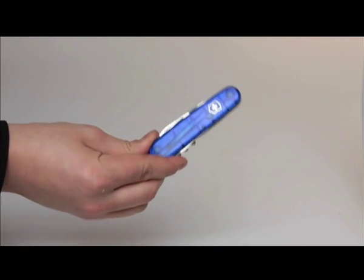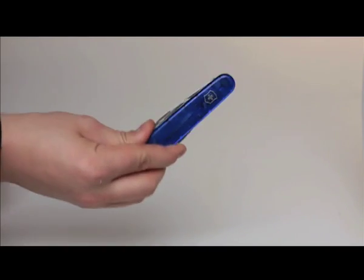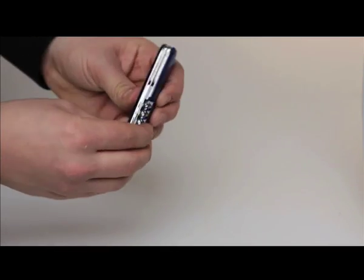Victorinox makes about 10 to 15 different varieties of Swiss Army Knives with a multitude of different tools on them. This one is called the Spartan and it has just enough to get you through all the different tools that you'll need on your trip through Europe.